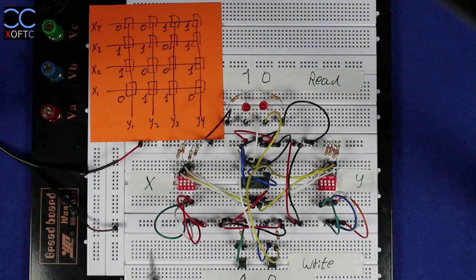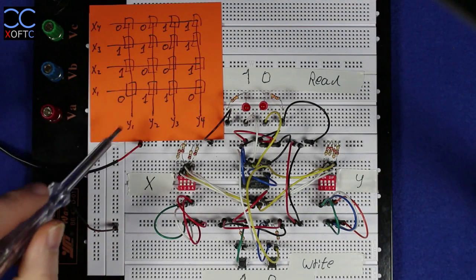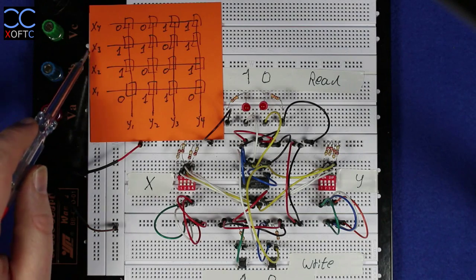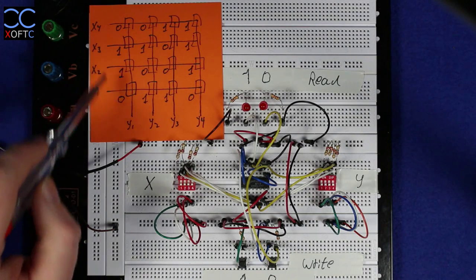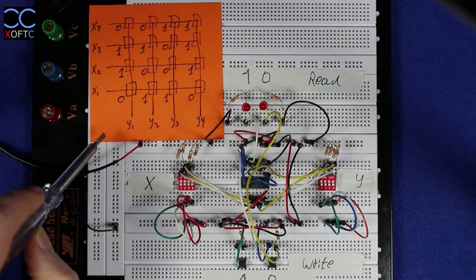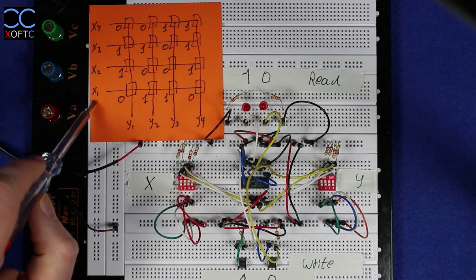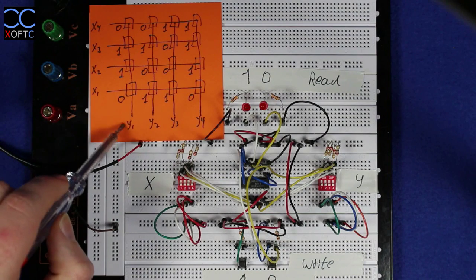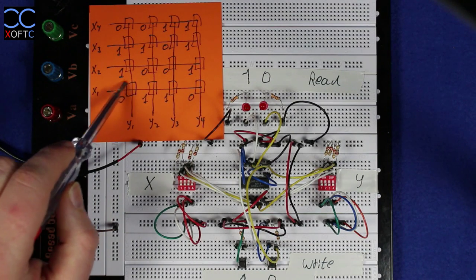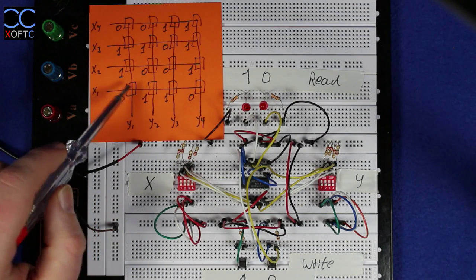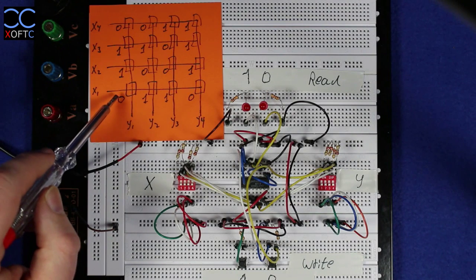The way that the memory works is pretty simple. You can see right here we have this matrix with 4 X inputs and 4 Y inputs. By feeding a certain value, for example X1 and Y1, we're addressing cell number one and we can assign a value to it, either one or zero.